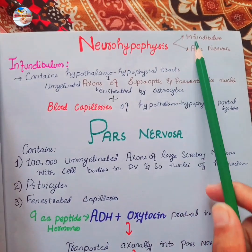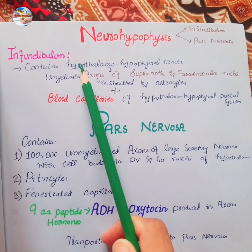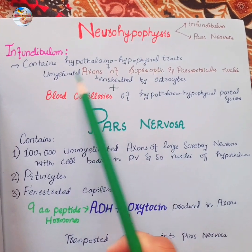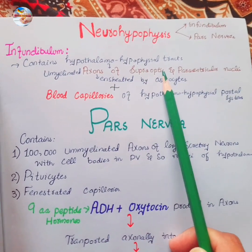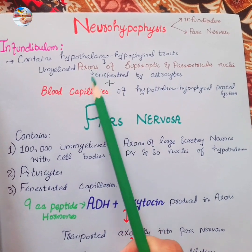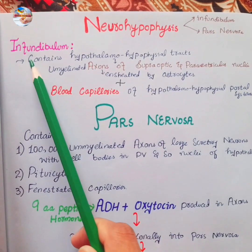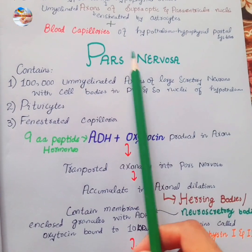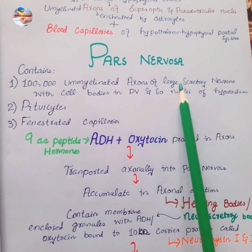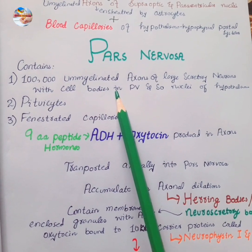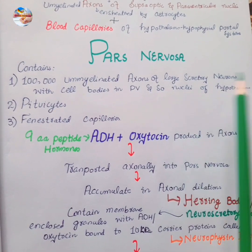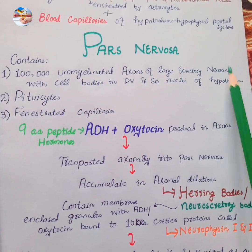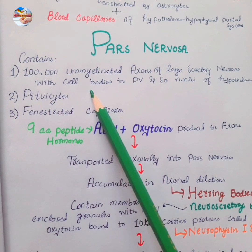The neurohypophysis or posterior pituitary consists of two parts: the infundibulum and the pars nervosa. The infundibulum is also called the stalk of the pituitary, and its basic contents are the hypothalamo-hypophysial tract, which contains unmyelinated axons of the supraoptic and paraventricular nuclei of the hypothalamus. These axons are ensheathed by astrocytes. The infundibulum also contains blood capillaries of the hypothalamo-hypophysial portal system. The pars nervosa contains about 100,000 unmyelinated axons of large secretory neurons whose cell bodies are located in the paraventricular and supraoptic nuclei of the hypothalamus. These neurons have axonal dilations at their ends called herring bodies or neurosecretory bodies, and pituicytes are also present among these unmyelinated axons, as well as fenestrated capillaries.